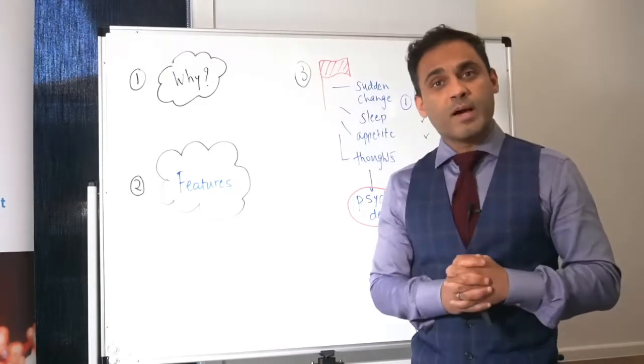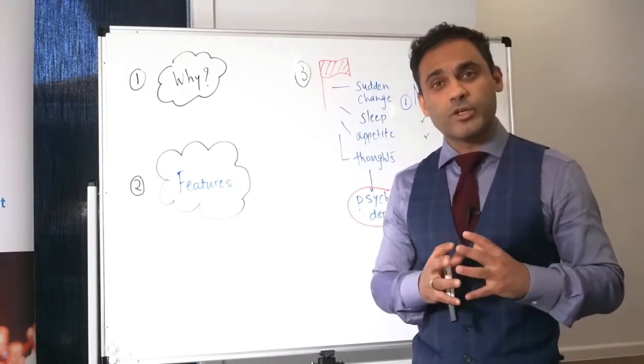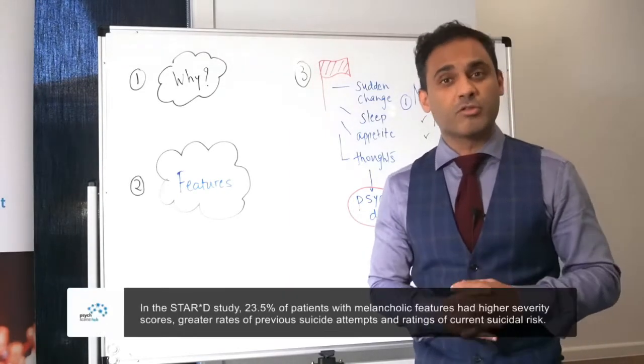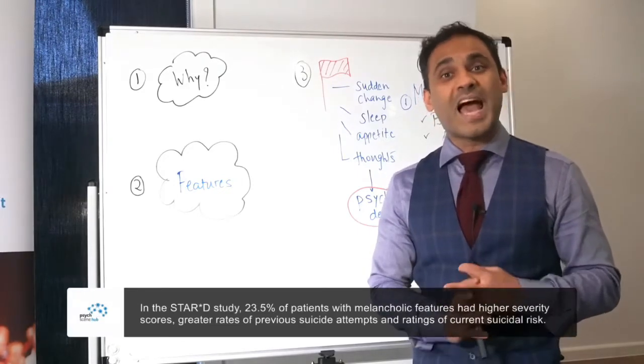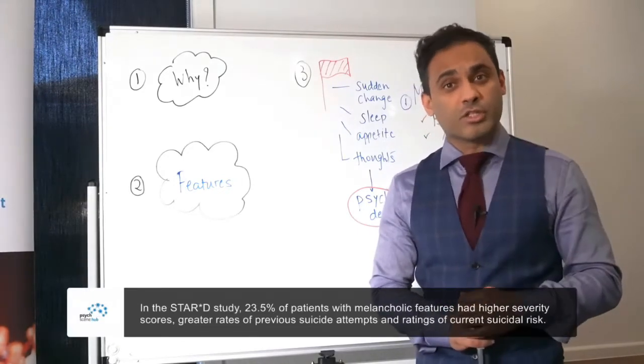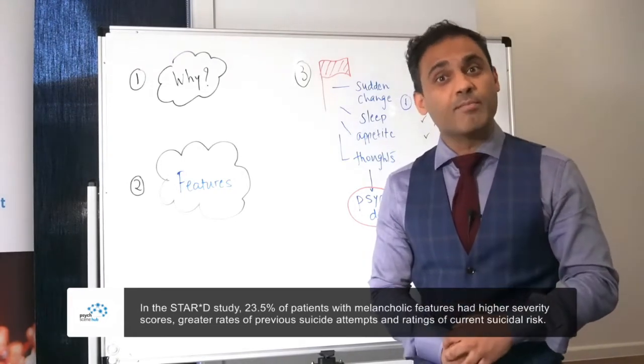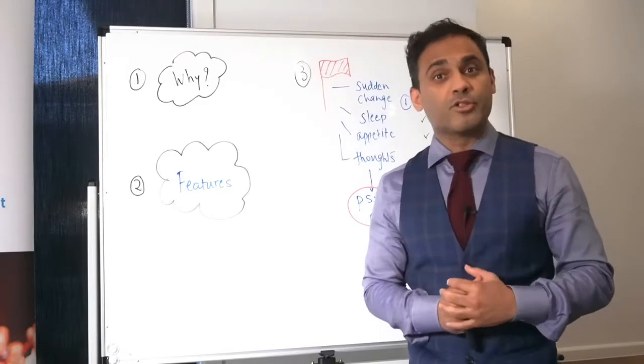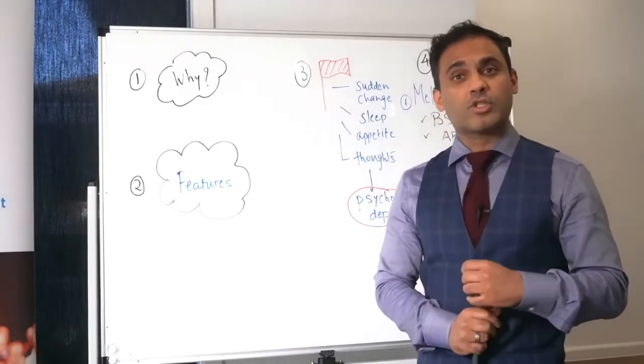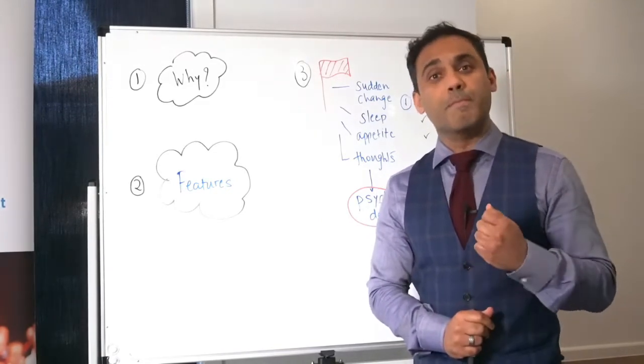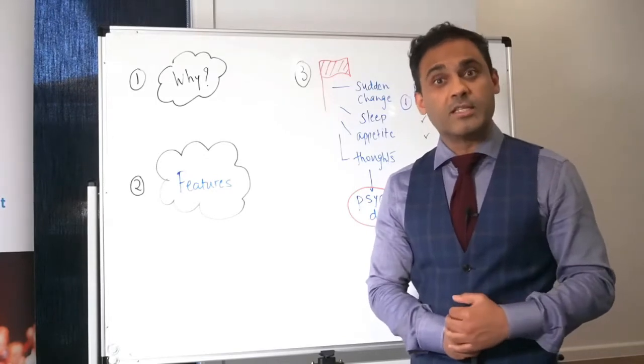Now, why am I talking about melancholic and psychotic depression? It's because it's the sort of depression that flies under the radar, very easy to miss and misdiagnoses are associated with it. Both these depressions are associated with a very high degree of morbidity and mortality, particularly suicide. And that's the reason why it's so important that we don't miss these two forms of depression as clinicians.